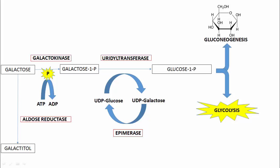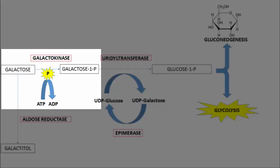The first product of our pathway is galactose, which is ingested as a dietary sugar. The first step involves converting galactose to galactose-1-phosphate through the enzyme galactokinase, which takes a phosphate from ATP, converting it to ADP. Importantly, this step is what allows galactose to enter the cell in the first place by adding the phosphate group, which has key implications for the disorders associated with this pathway.